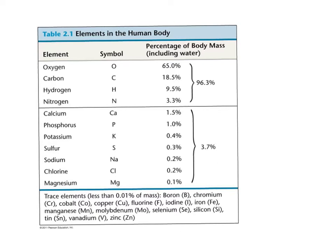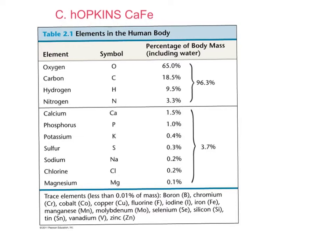One way to remember the most common elements in living things is the mnemonic C Hopkins CaFe — carbon, hydrogen, oxygen, phosphorus, potassium, iodine, nitrogen, sulfur, calcium, and iron. C Hopkins CaFe — those are our most common elements found in living things.